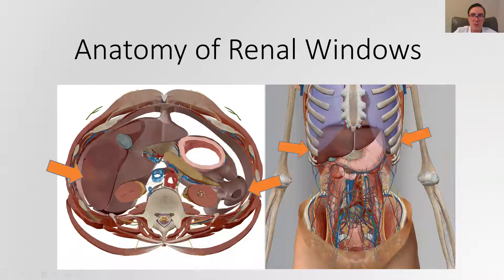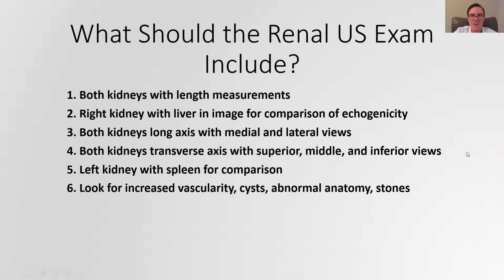Here's an anatomical diagram showing what our windows are like. This cross-sectional view shows you that you're trying to shoot through the liver in order to see the right kidney, and through the spleen to see the left. For the exam, you want to get the dimensions of the kidney, including length measurements for both. You'll also want cross-sections of the kidney from the long axis — going lengthwise on the kidney.